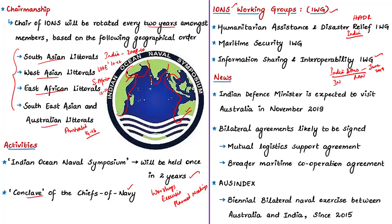This news article tells that the Defence Minister of India is expected to visit Australia in the month of November 2019. During his visit, some bilateral agreements are likely to be signed, for example the Mutual Logistics Support Agreement and a broader maritime cooperation agreement. These agreements are not that much required to be remembered from an exam point of view, but know that a bilateral meeting is going to happen between India and Australia.